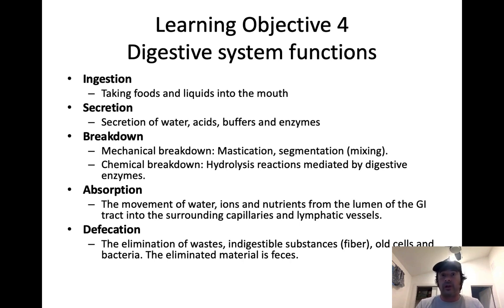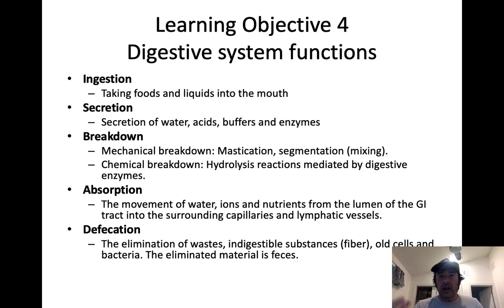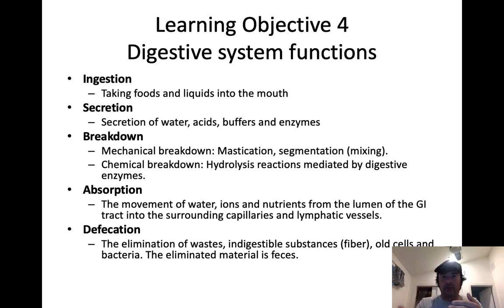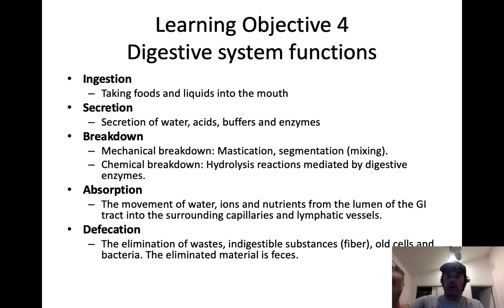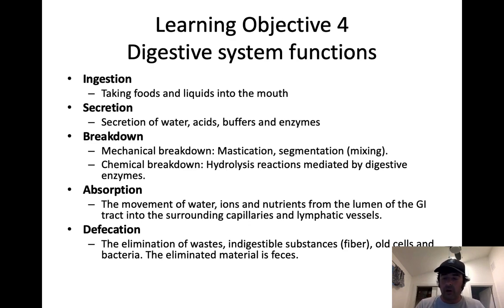Those fats flow through lymphatic capillaries called lacteals and then along lymphatic circulation before eventually being reintroduced to the cardiovascular system. Once things are absorbed and distributed throughout the body, we can use them — like amino acids and monosaccharides. Defecation: anything that isn't digestible will pass through the GI tract and accumulate toward the distal end of the large intestines. That indigestible material, toxins, fiber, and old cells are eliminated in the process of defecation.